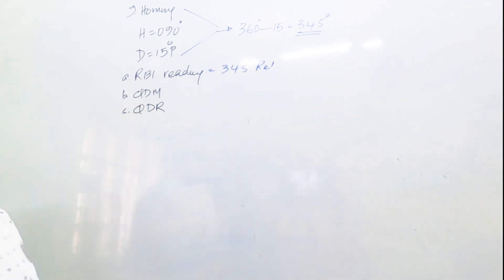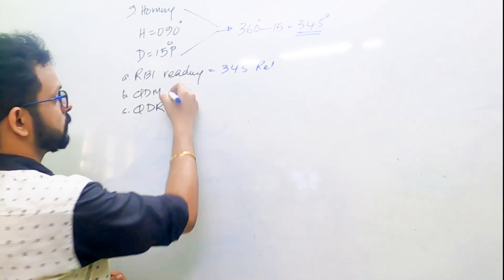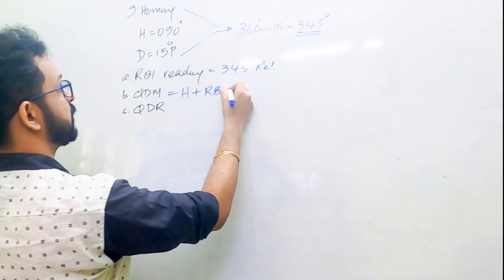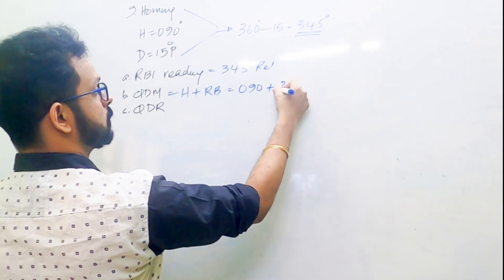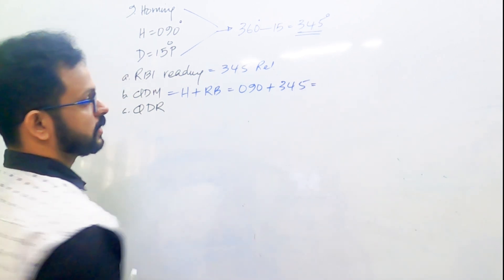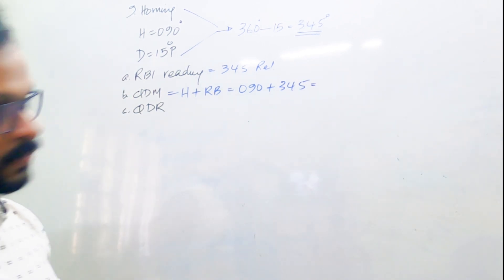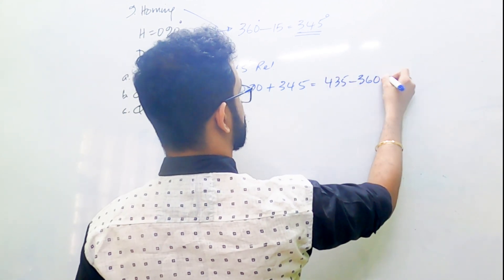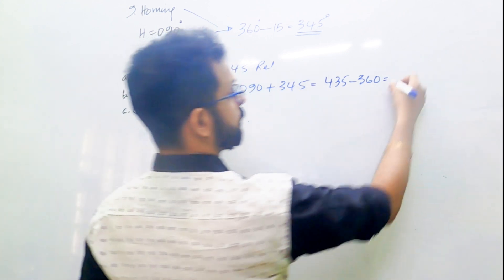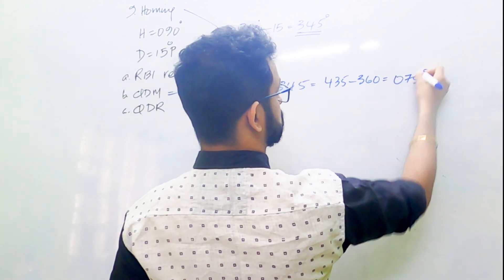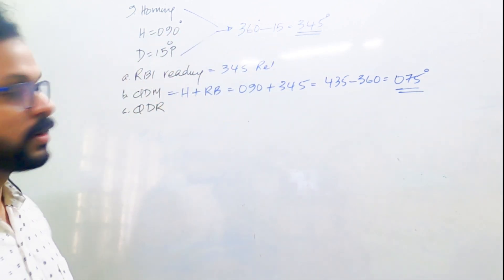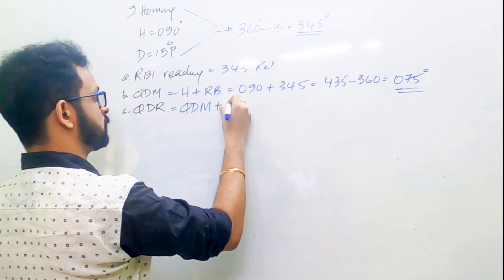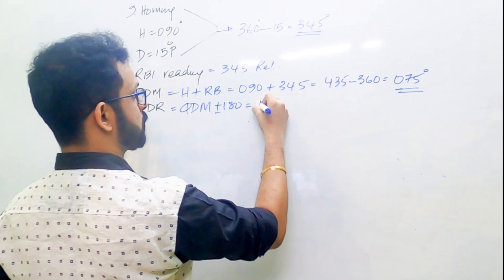QDM equals heading plus relative bearing. The heading is 090 and the relative bearing is 345, so 090 plus 345 equals 435. Subtract 360 and you get 075 degrees — that is the QDM. For QDR, the formula is 180 plus QDM, so 180 plus 075 equals 255 degrees.